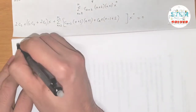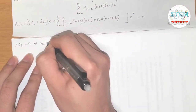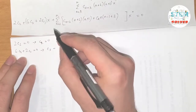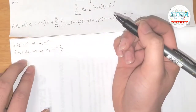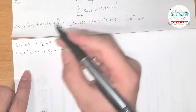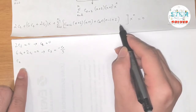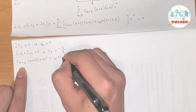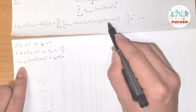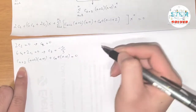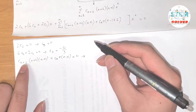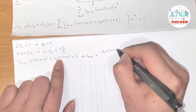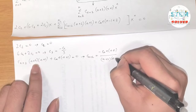Setting coefficients to zero: 2c₂ = 0 so c₂ = 0. For the x term: 6c₃ + 2c₁ = 0, solving for c₃ gives c₃ = −c₁/3. For the recurrence relation, setting everything inside the bracket to zero and solving for the largest coefficient c_(n+2): c_(n+2) = −cₙ·n(n+1) / [(n+2)(n+1)]. Notice (n+1) cancels, giving c_(n+2) = −n·cₙ / (n+2), for n ≥ 2.